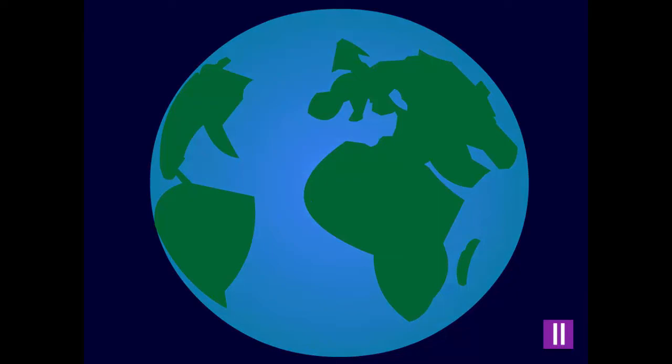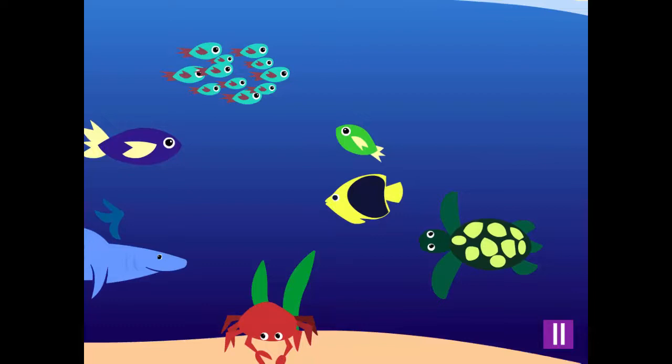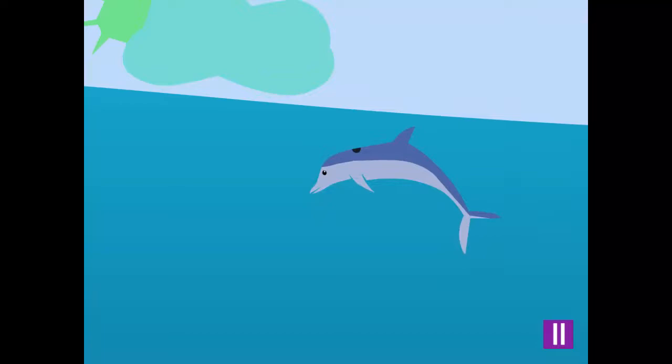There are all kinds of animals and plants that live in the different oceans. Some live near the top of the ocean and some live deep in the ocean near the bottom.